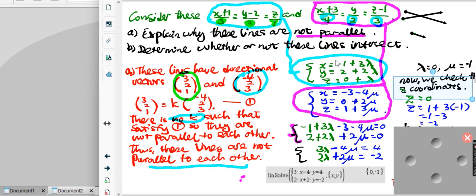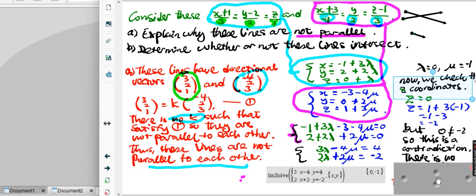I put lambda into the green equation: z equals zero. Then put mu equals negative one into the blue: z equals negative two. But zero is not equal to negative two. This is a contradiction.